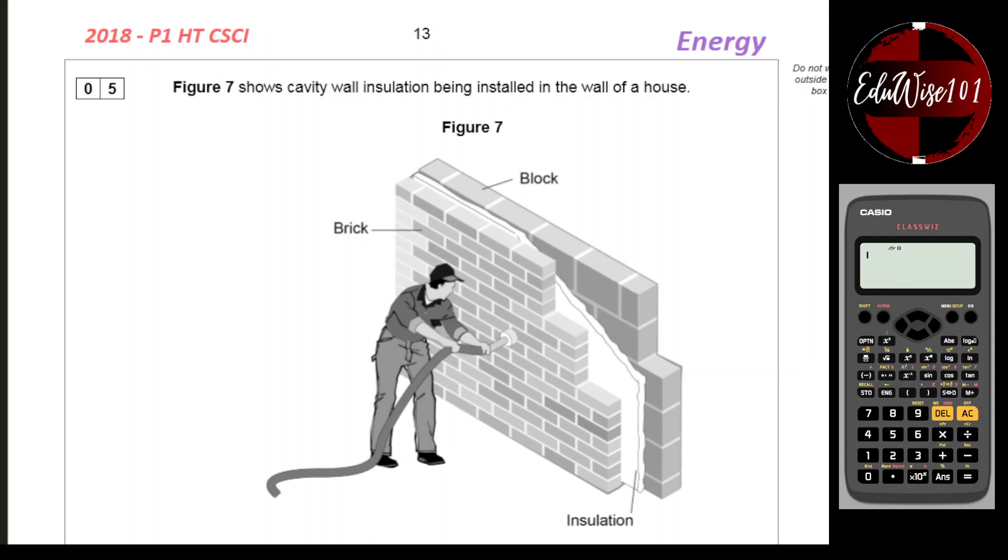Hello everyone and welcome to the video. My name is Ketish. In this video I'm going to go through the AQA 2018 paper 1 higher tier for the combined science. This is question number 5. This question is on the topic of energy.